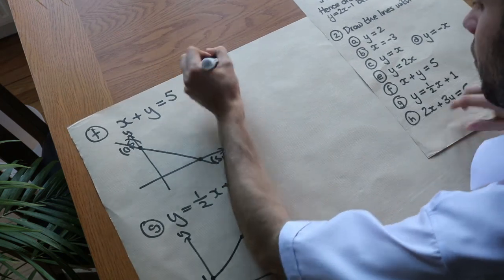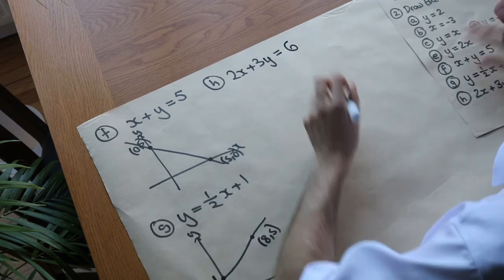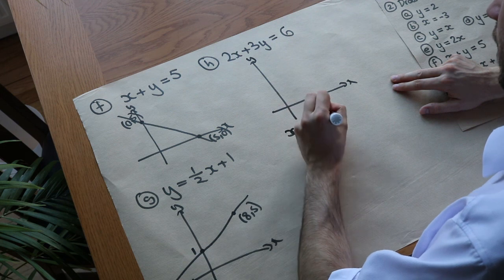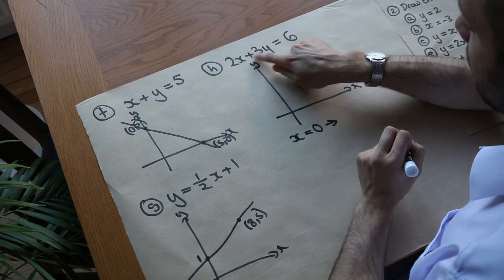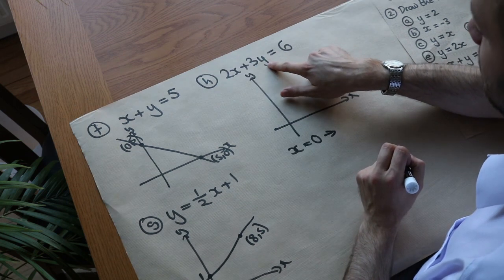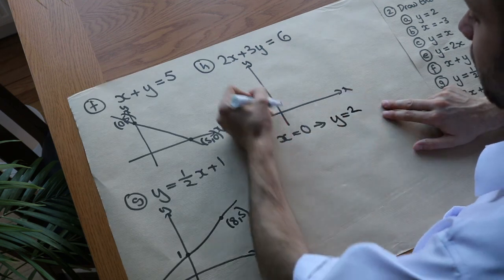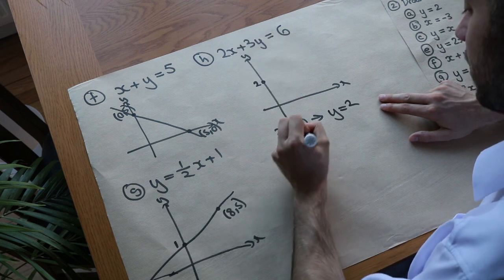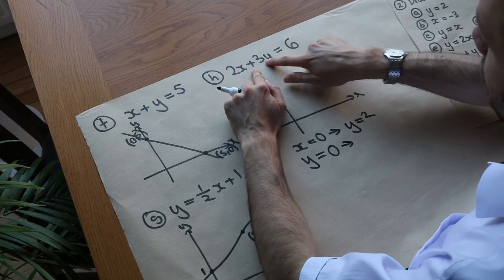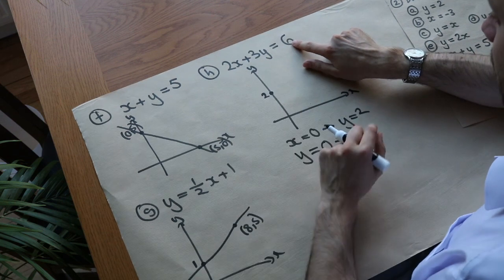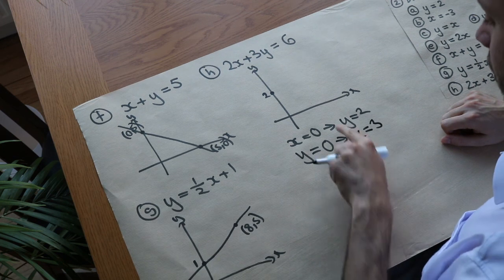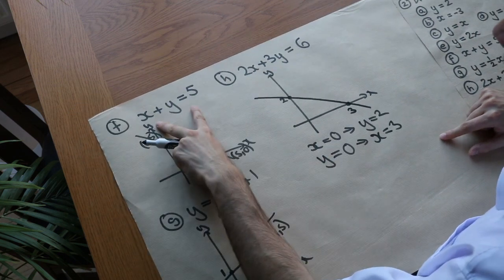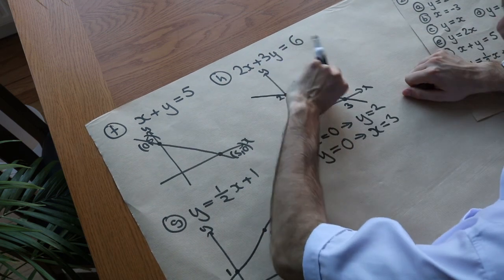The final and hardest example: 2x + 3y = 6. If x is 0: 2 times 0 is 0, so 3y = 6, meaning y = 2. We plot (0, 2). Now let's try y = 0: then 2x + 0 = 6, so 2x = 6 and x = 3. We plot (3, 0). Joining these two points gives our line. Because we have these numbers in front of x and y, that changes the angle of the line.